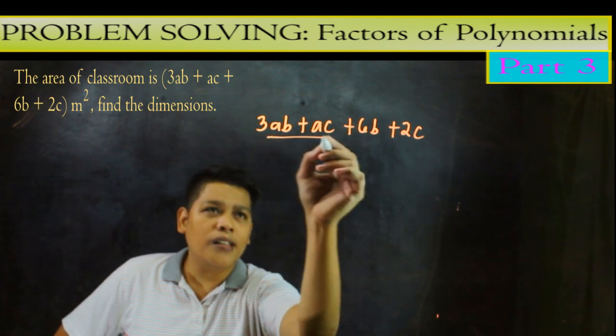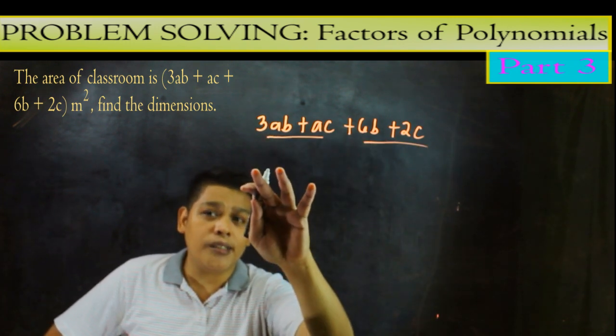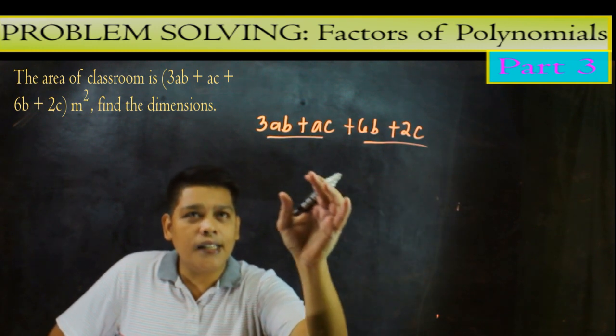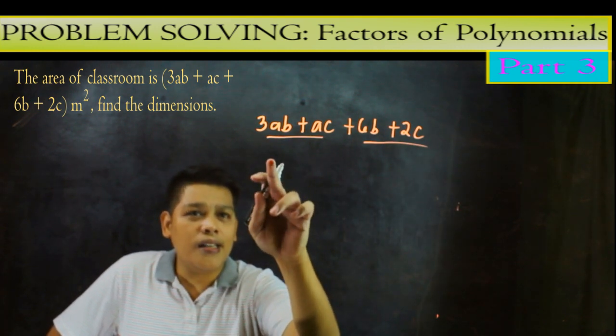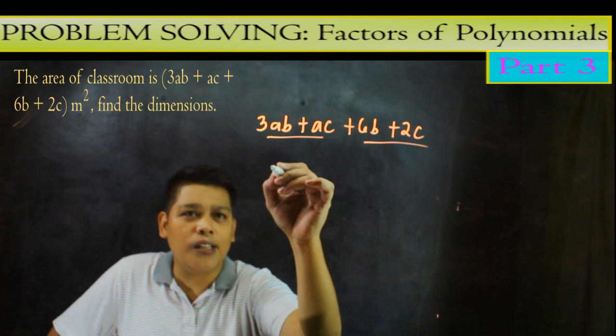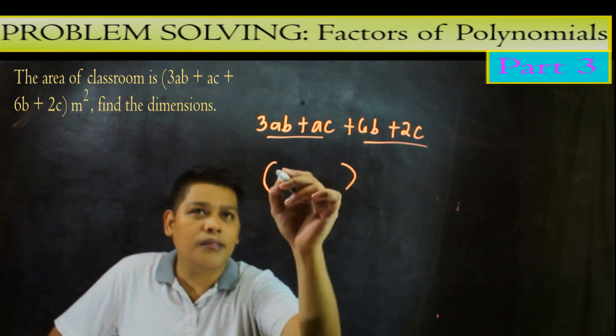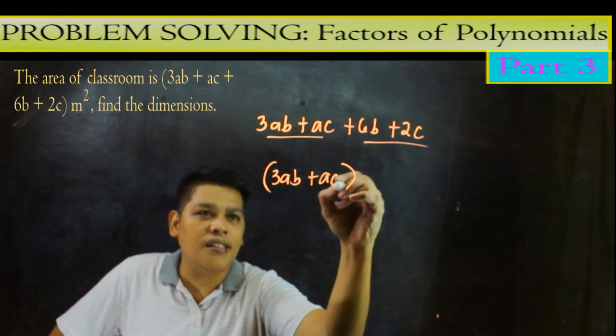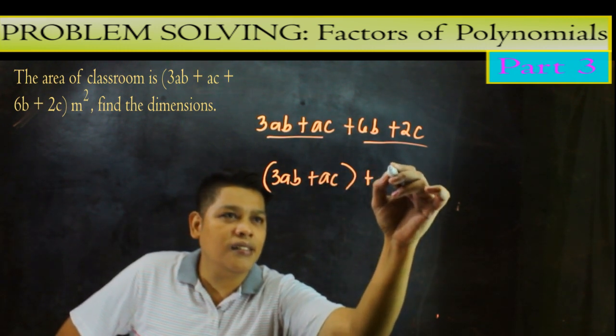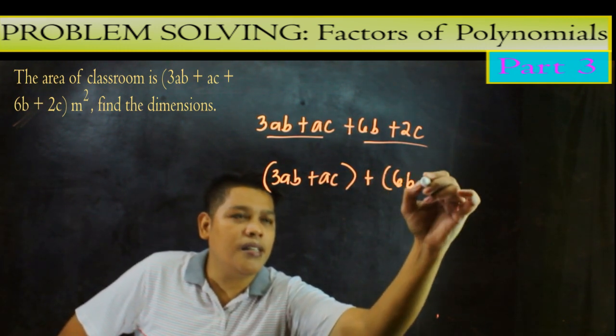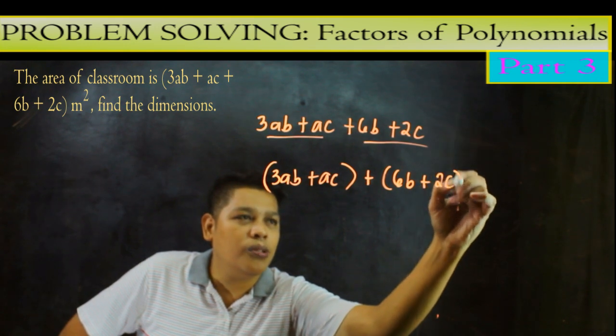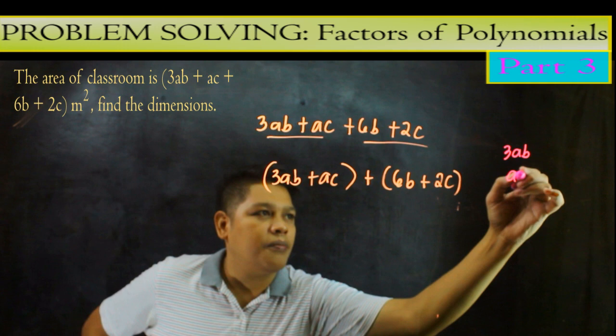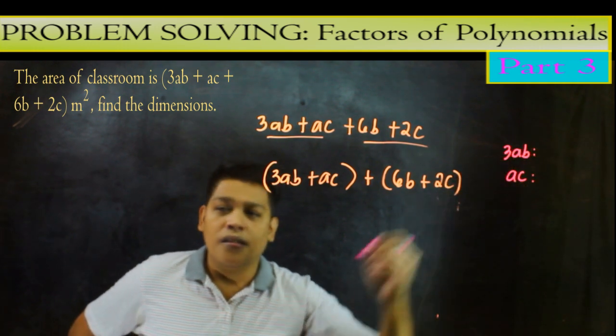So ipapactor natin itong 3ab plus ac plus 6b plus 2c. So grouping i-group natin itong dalawa na ito dito first term, second term, tsaka third term, tsaka fourth term. So dahil i-group natin yan. So alin dito? So parang isusulat natin yan as 3ab plus 3ab plus 6b plus 2c. Tapos ac.